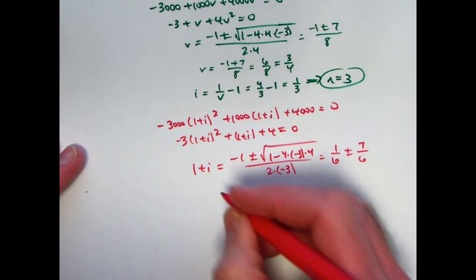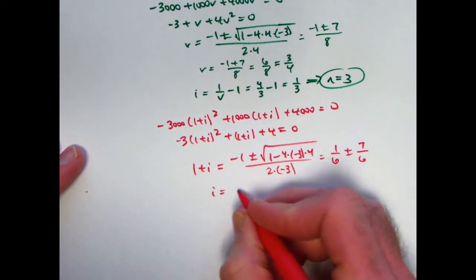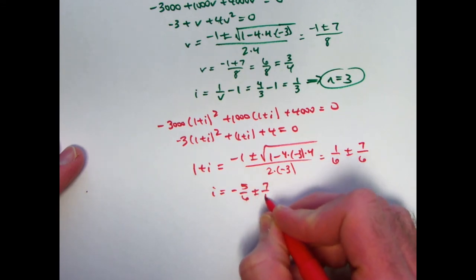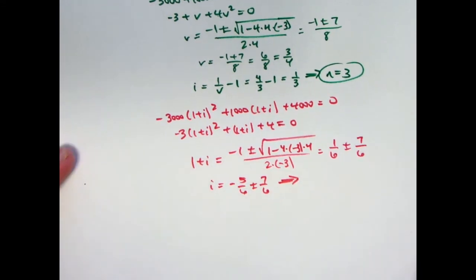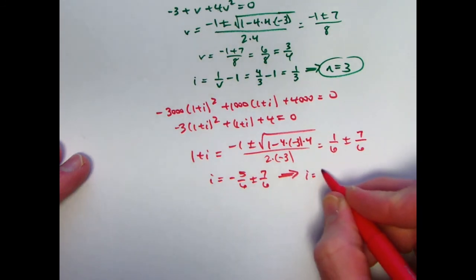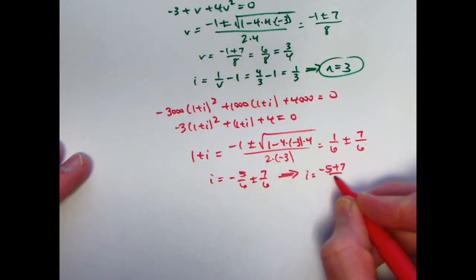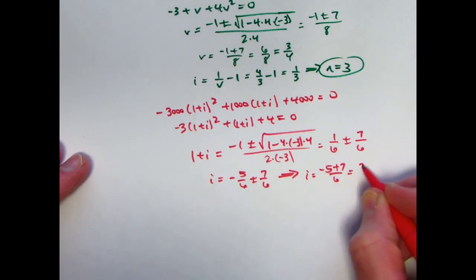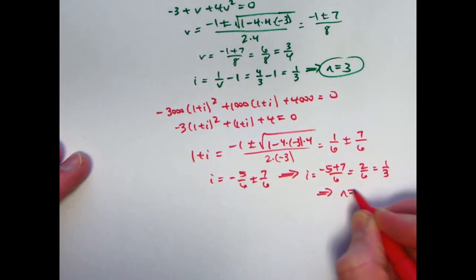Subtracting 1 from both sides, we get i is negative 5 sixths plus or minus 7 sixths, and the answer that gives you meaningful interpretation would be to take the plus. i is negative 5 plus 7 over 6, which would be 2 sixths or 1 third, and therefore, once again, n is 3.